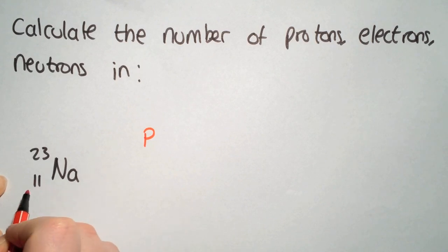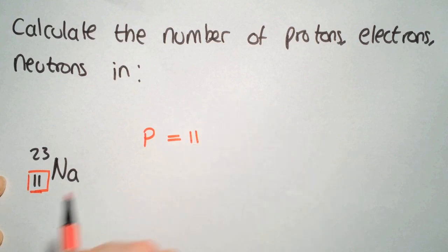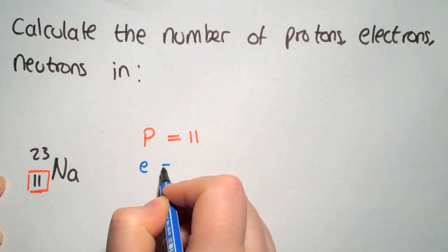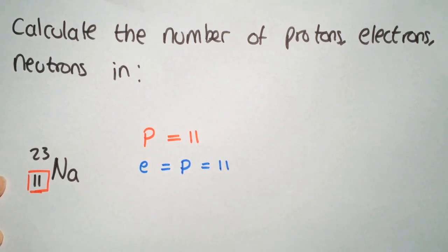For the protons it is always this number at the bottom here so our protons equal 11. For the electrons we have decided it is neutral because it doesn't have any charge so the electrons must be equal to the protons so it is also 11.